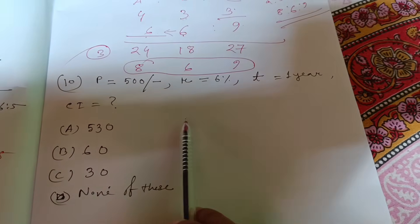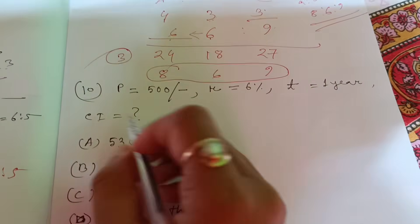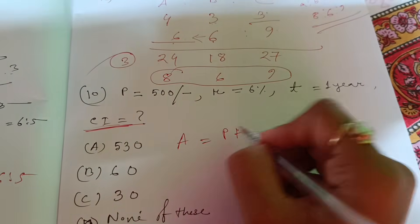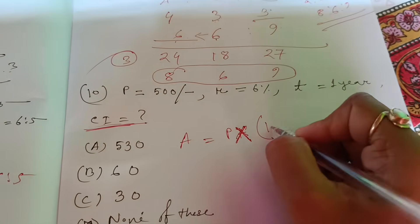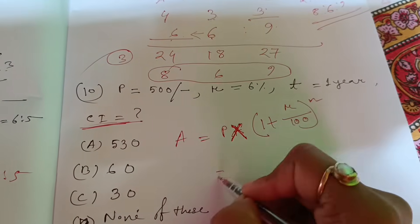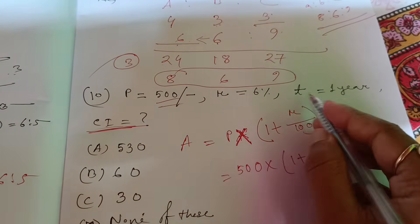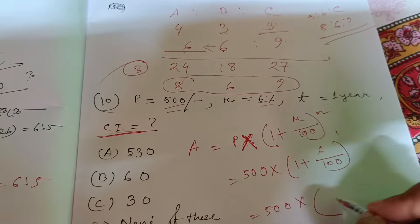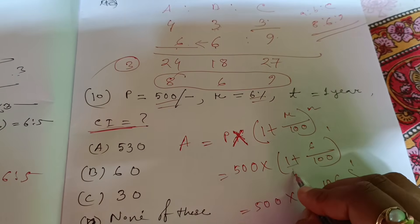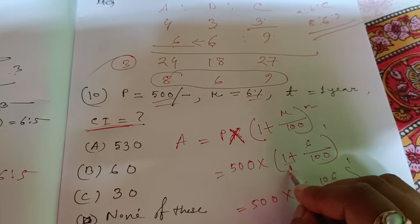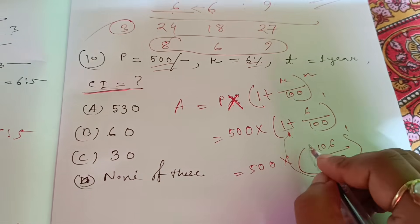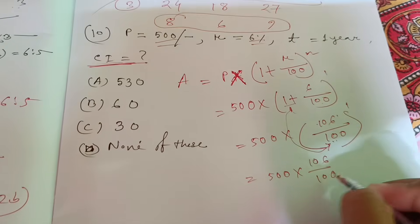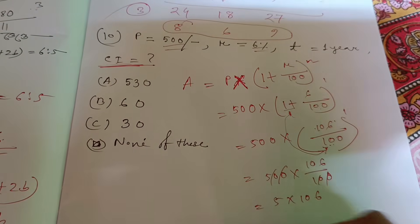This is Compound Interest. The formula is A equals P into (1 plus R by 100) to the power N. P means 500, R is 6 by 100, N is 1. So A equals 500 into (1 plus 6 by 100), which is 500 into 106 by 100.